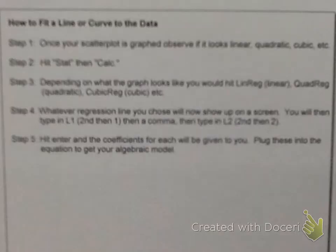To do the best fit line or curve — this is lin-reg, quad-reg, cubic-reg. Honors Algebra 2 kids, you remember this from last year. Once your scatter plot is graphed, observe if it looks linear, quadratic, cubic, etc. Hit Stat, then Calc. Depending on what the graph looks like, choose lin-reg, quad-reg, or cubic-reg. Whatever regression you chose will show up on screen. Type in L1, then a comma, then L2. Hit Enter and the coefficients will be given to you. Plug these into the equation to get your algebraic model.